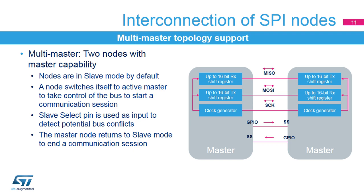SPI networks can operate in a multi-master environment. This mode is used to connect two master nodes exclusively. When neither node is active, they are by default in slave mode. When one node wants to take control of the bus, it switches itself into master mode and asserts the slave select signal on the other node through a GPIO pin. Both slave select or SS pins work as a hardware input to detect potential bus collisions, as only one can master the SPI bus at a single time. After the session is completed, the active master releases the slave select signal and returns back to passive slave mode.